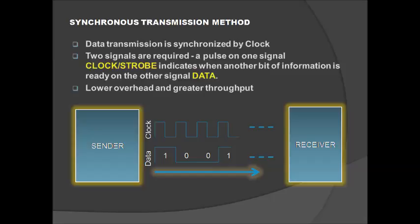Practically all parallel communication protocols use synchronous transmission. Synchronous transmission sends data as one long bit stream or block of data. It is faster than asynchronous because very few bits need to be transmitted — only data bits, with no extra control bits. The sender and receiver use two signals, clock and data, and with respect to the clock the data is read at the receiver end.